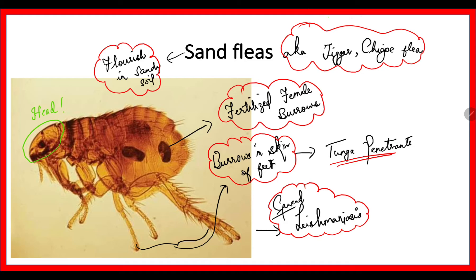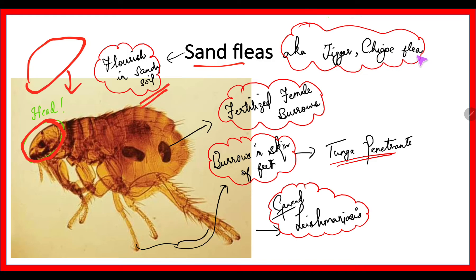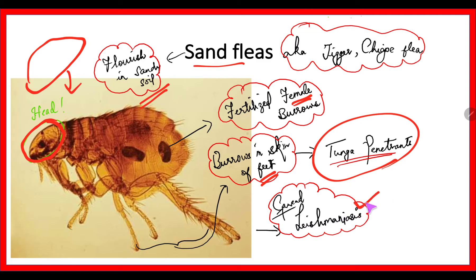Next is sand flea — it looks like rat flea but differs in the head shape, which is oval rather than cone-shaped. It flourishes in sandy soil, hence the name sand flea. It is also known as jigger or chigoe flea. Similar to sand fly, only the female is troublesome — the fertilized female burrows into the skin, especially in the feet. This condition is called Tunga penetrans, where Tunga is the genus. It spreads leishmaniasis.